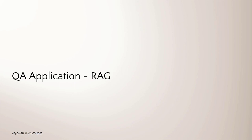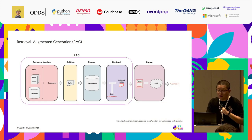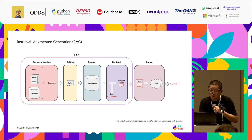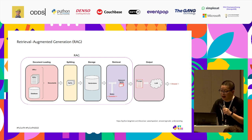Next, we will see how to use these components to develop a question and answer application using the RAG technique. RAG, or Retrieval Augmented Generation, is a technique for augmenting LLM knowledge with additional data — either private or real-time — by bringing the appropriate information and inserting it into the model prompt. This picture shows an overview of the RAG process for question and answer on documents. RAG consists of document loading, splitting, storage, and retrieval.